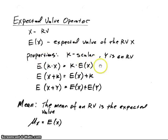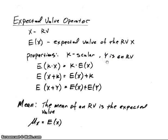The expected value operator has certain properties. It's a linear function, and we can show it has the following properties. k is a scalar value in this case, and y is some other random variable. If we have k times x, the expected value of that — we can bring out the k value and have that equal k times the expected value of x.